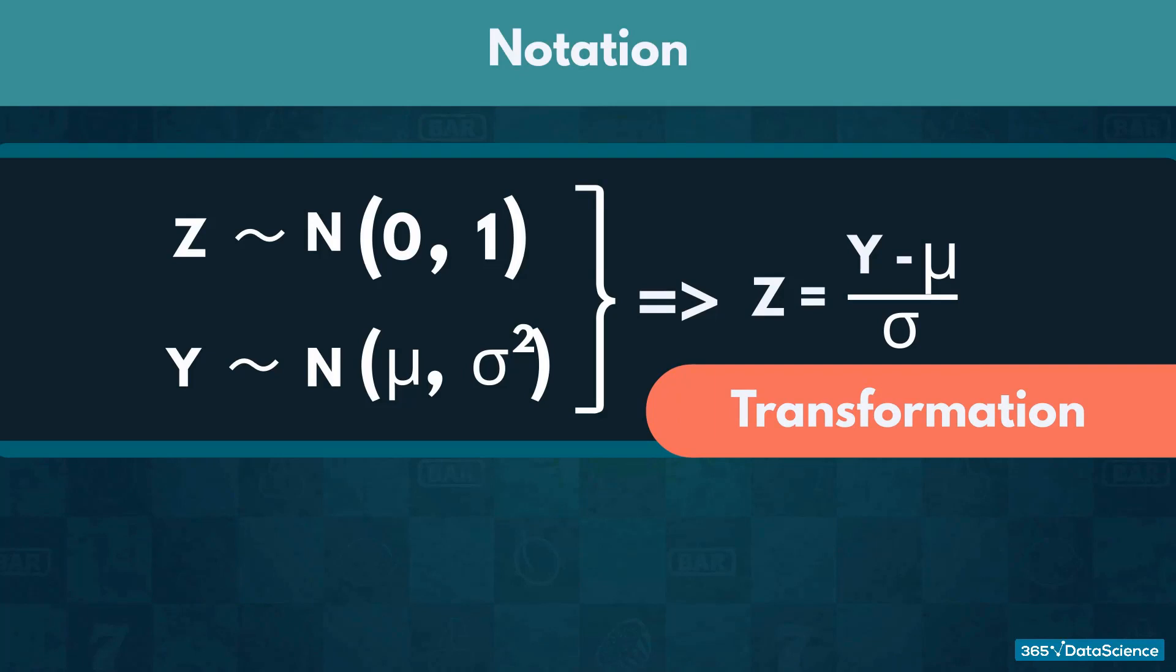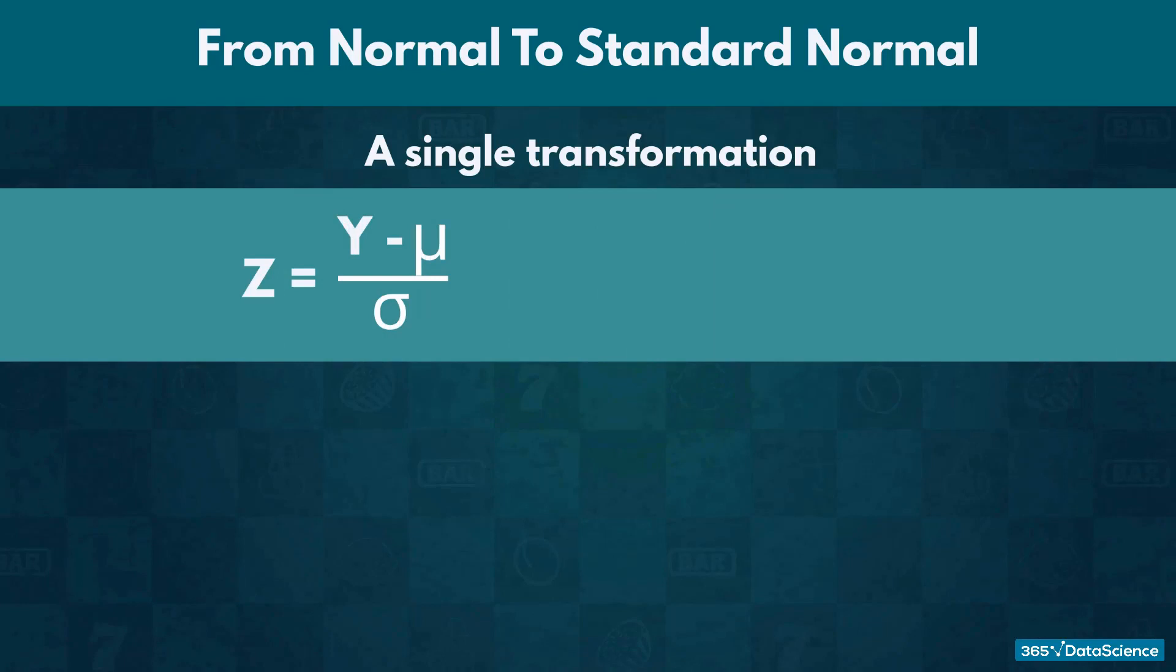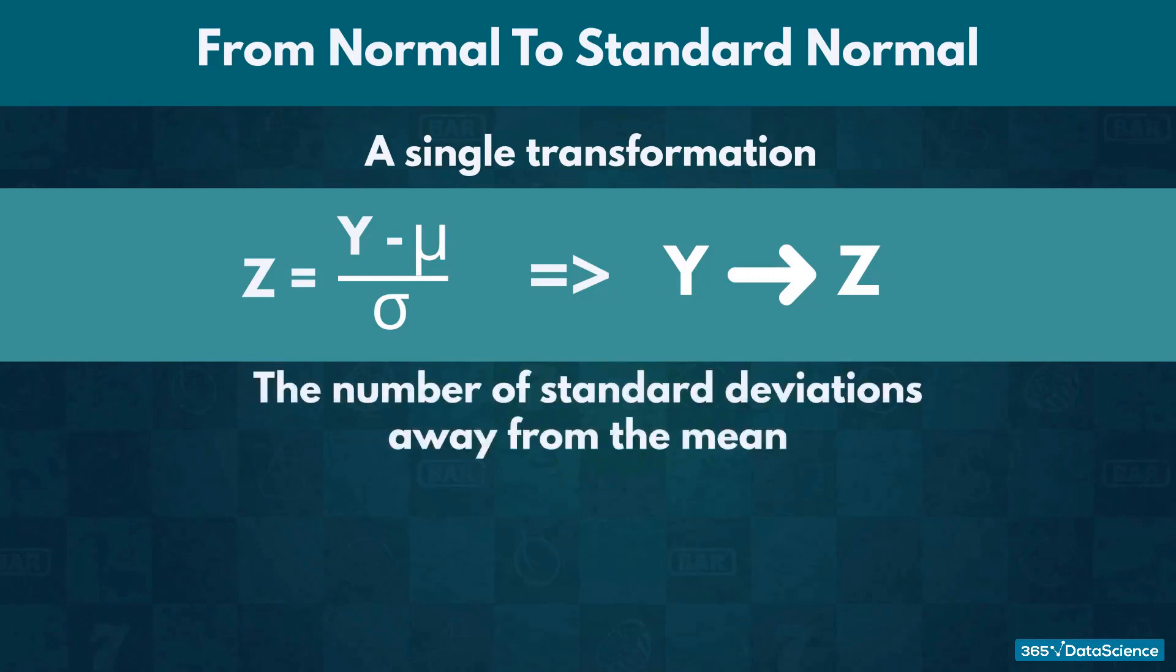Applying this single transformation for any normal distribution would result in a standard normal distribution, which is convenient. Essentially, every element of the non-standardized distribution is represented in the new distribution by the number of standard deviations it is away from the mean.